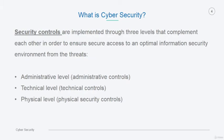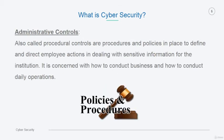In the coming few slides, we'll focus on security controls and measures, which are implemented through three main levels that complement each other in order to ensure a secure access to an optimal information security environment from all threats and risks. The first is the administrative level with administrative controls, also called procedural controls, which are a set of policies and procedures in place to define and direct employee actions in dealing with sensitive information. It's concerned with how to conduct the business and daily operations — consider policies and procedures as guidance for employees to perform their daily business and operations.